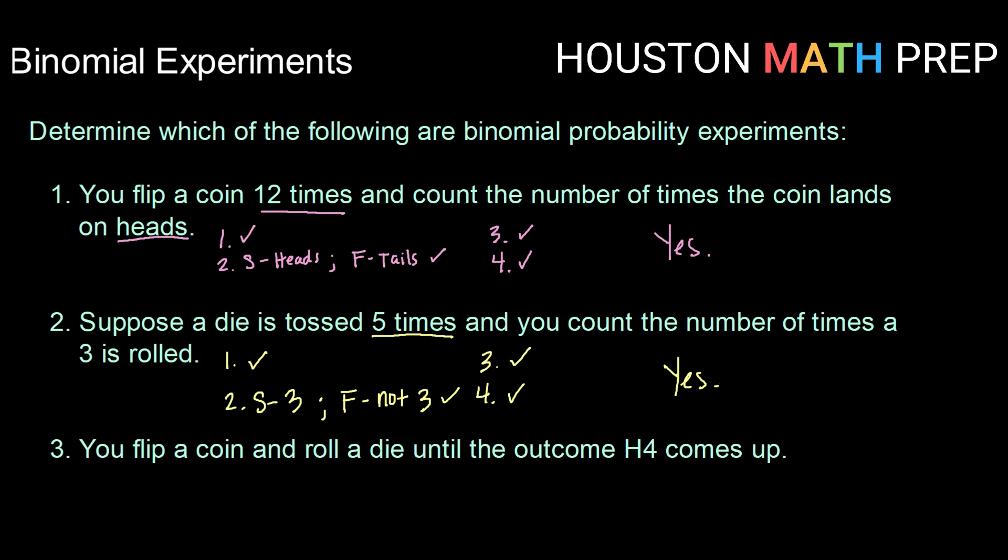Okay, and finally, our last one. You flip a coin and roll a die until the outcome H4 or heads and a four comes up. So let's set out to test our possible criteria. Number one, do we have a fixed number of trials and are those trials independent of one another?